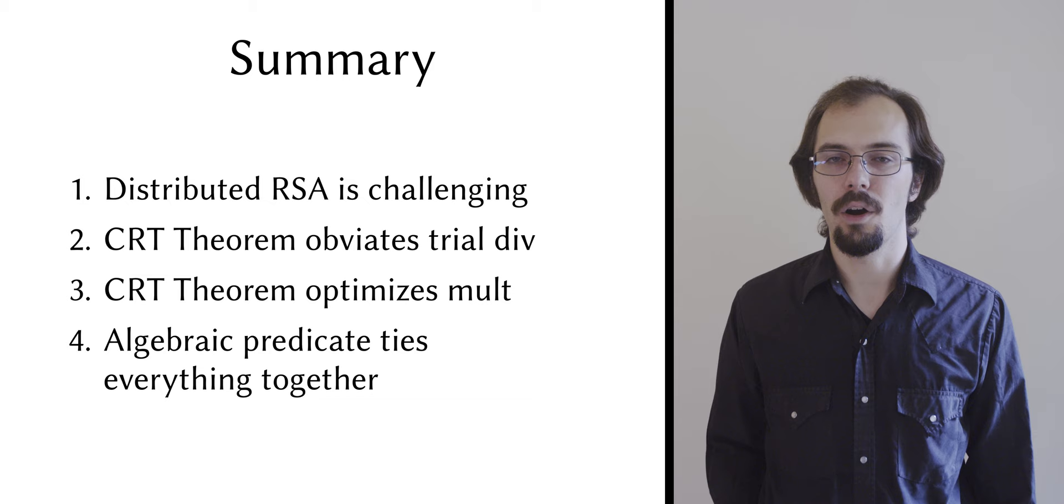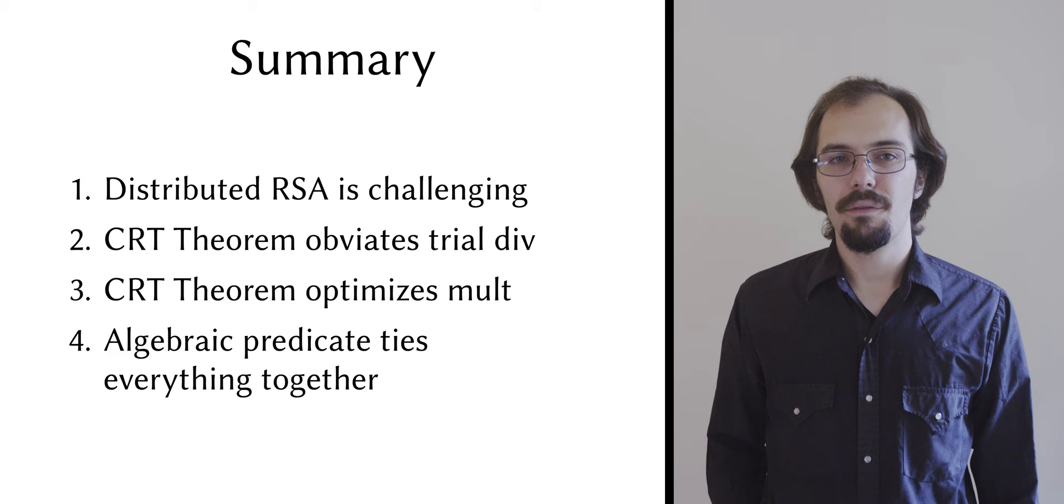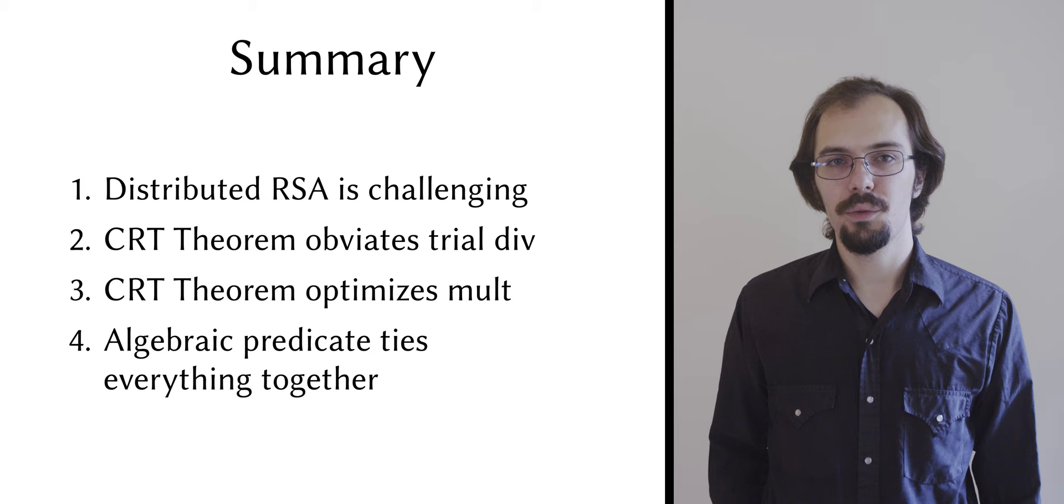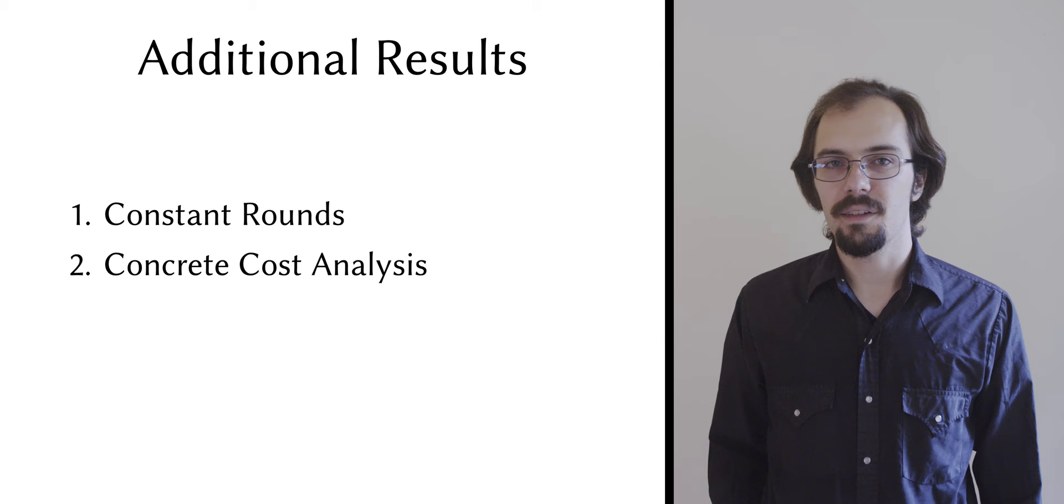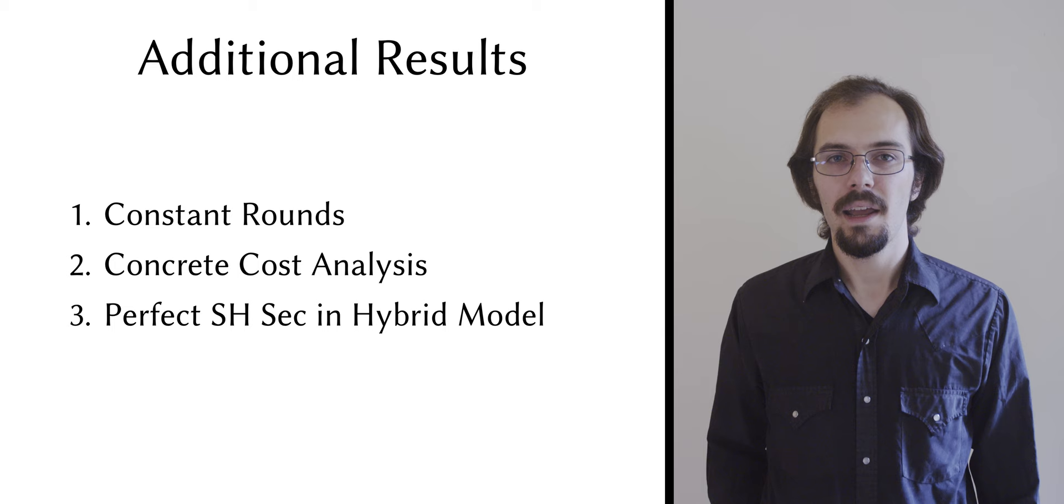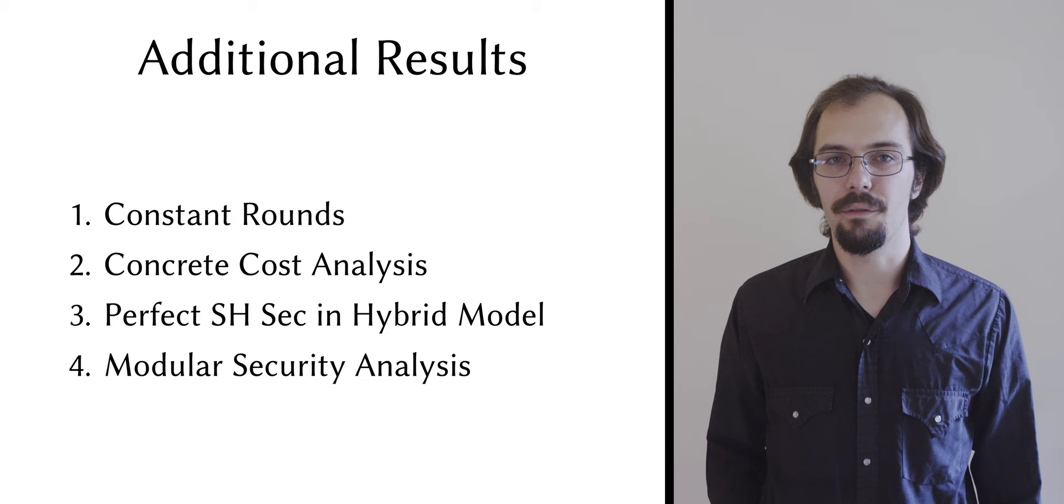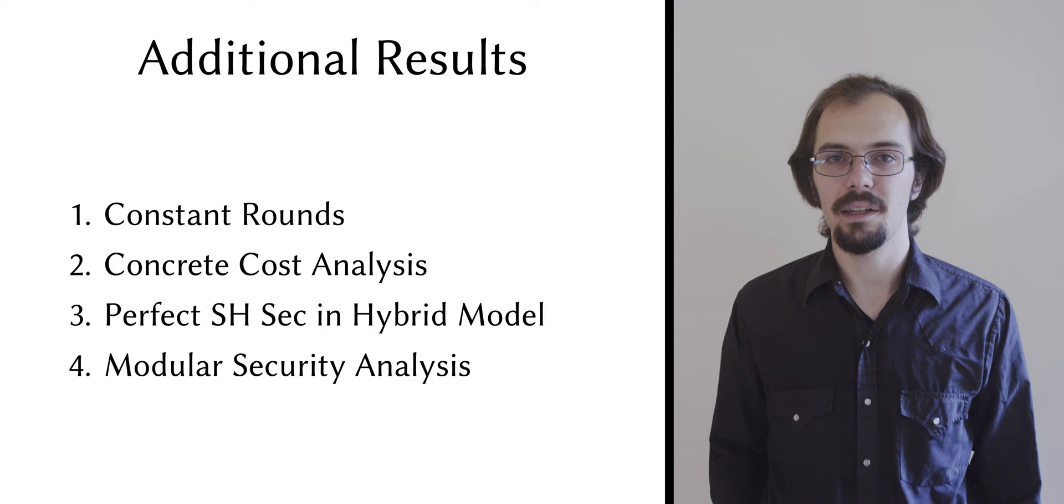In the paper, of course, everything is presented in much more rigor. And there are a few additional results. We show how to achieve a constant round count, and we give a concrete cost analysis. We also present a semi-honest variant of the protocol, with perfect security in the same hybrid model as the main protocol. And we give a modular security analysis of the main protocol, with some informal discussion of how various modules can be substituted to achieve stronger security guarantees, such as adaptive security or identifiable abort.